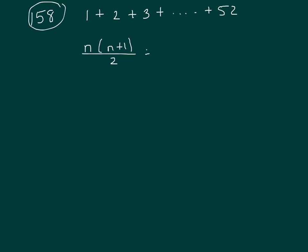So n is the number you want to sum up to, so it would be 52. And then 52 plus 1 is 53, and then you want to divide by 2. And 2 will go into 52 26 times, so then you need to multiply 26 times 53.